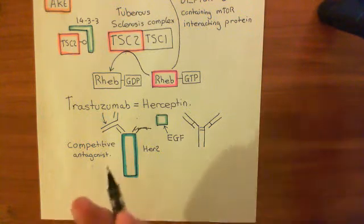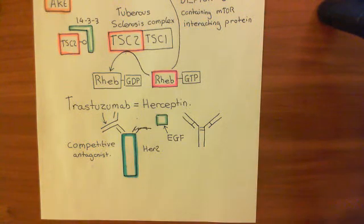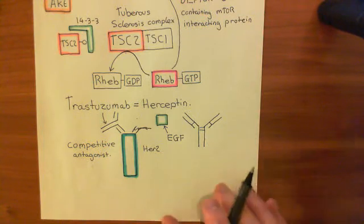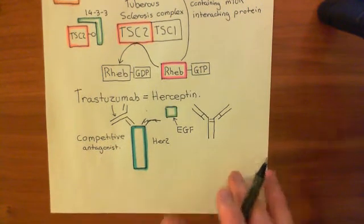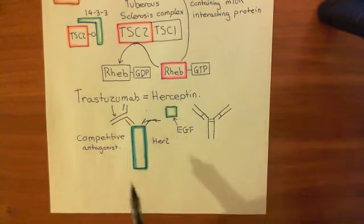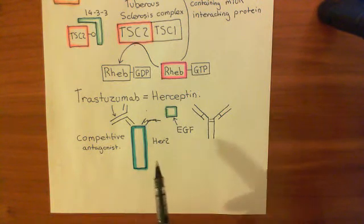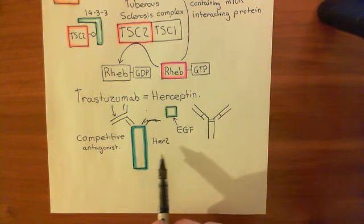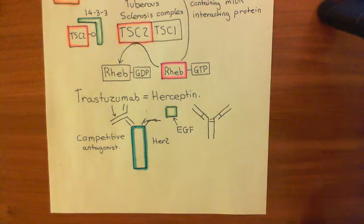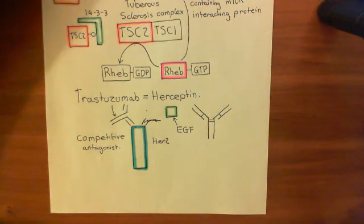And that's the basis of how this drug, trastuzumab, can be used to treat breast cancer where you have over-activation of these HER2 receptors. And a common way that you see gain-of-function mutations in HER2 is via amplification of the gene, where you have multiple copies of the gene, more than two.